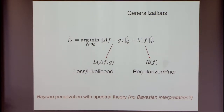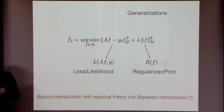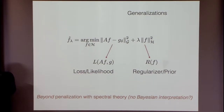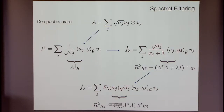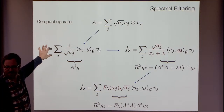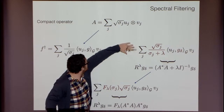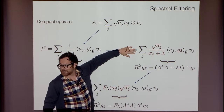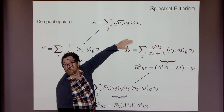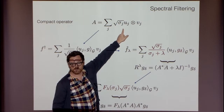What I'll describe next is a spectral perspective on this kind of algorithm, which suggests another way to think about estimators — not penalization, but something else. This will be first in a simplified linear setting, then with pointers to how you can extend the idea. The key point: write down the singular value decomposition of the operator A. Assume A is compact, or just finite dimensional, and take the SVD.